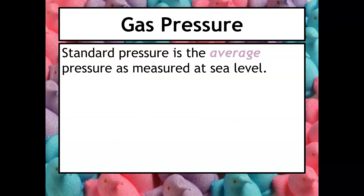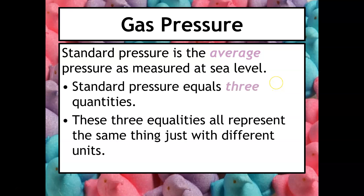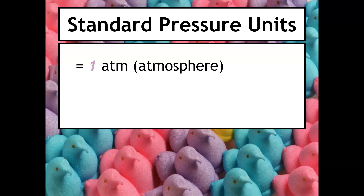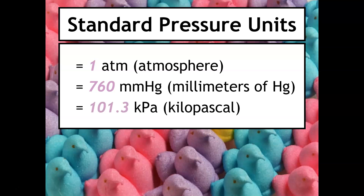Standard pressure is the average pressure measured at sea level. Standard pressure equals three equivalent quantities that just have different units: one atmosphere (atm), 760 millimeters of mercury (mmHg), and 101.3 kilopascals (kPa). These three equalities all represent the exact same pressure.